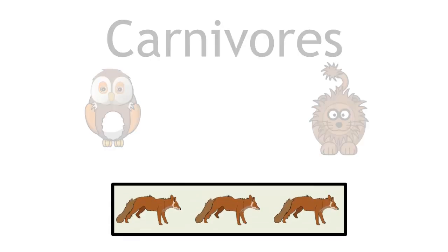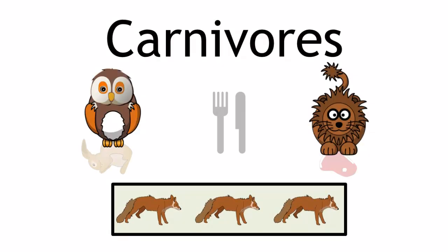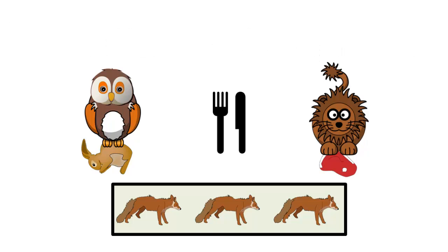Level 3 is carnivores who eat herbivores. They are eating organisms from level 2, so they are the secondary consumers.